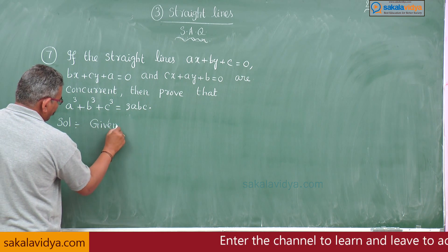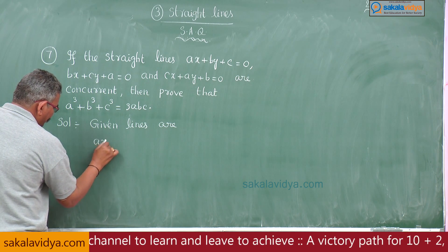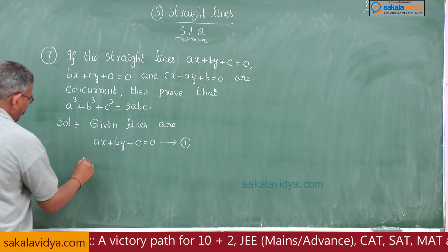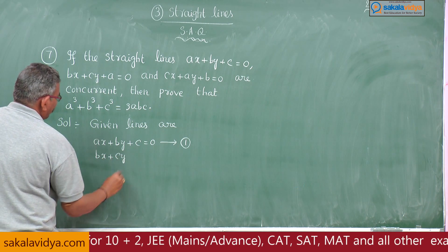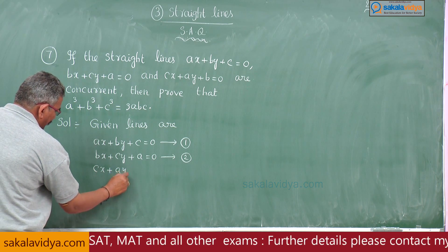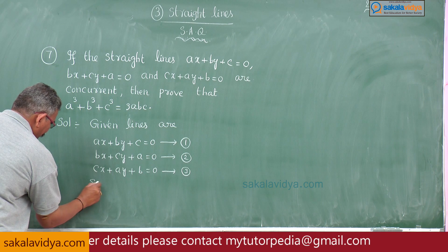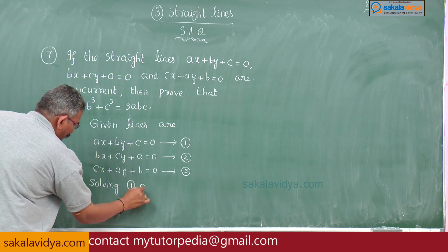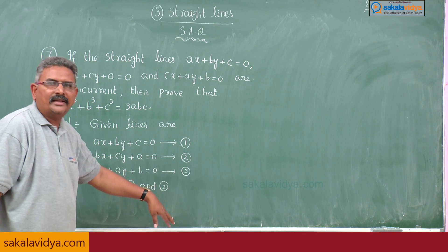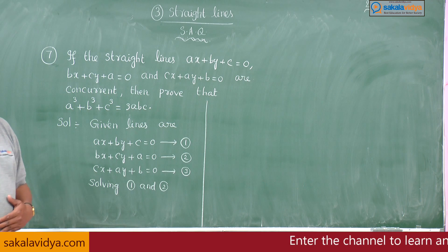Solution. The given lines are: Ax plus By plus C is equal to 0, equation 1; Bx plus Cy plus A is equal to 0, equation 2; Cx plus Ay plus B is equal to 0, equation 3. First, solving equations 1 and 2. You may ask why solve 1 and 2 — you can also solve 2 and 3 or 1 and 3, but for convenience we solve 1 and 2 using the cross multiplication method.